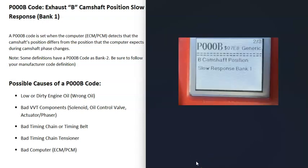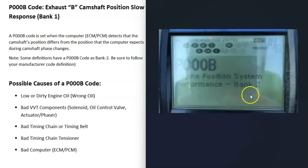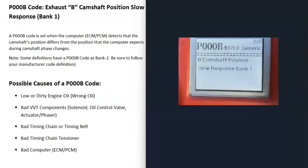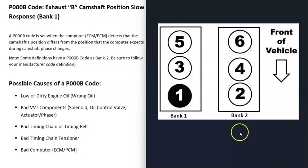One thing to note about this code is that some manufacturers have this listed as bank two. So if you are getting another code and it points to bank two, be sure to follow that. Most definitions have this listed as bank one, but be sure to follow what your manufacturer has the definition listed as. If you have a V6 or V8 engine, you're going to have two banks. Bank one is always going to be the side of the engine with the number one cylinder, and the opposite of that is bank two.